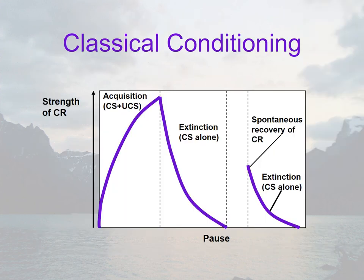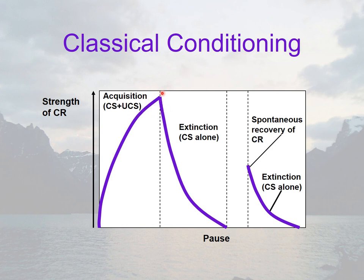Let's put all these terms together into one image. Here is the start of learning: sound the tone and you get no response at all, no salivation. Now you're pairing the neutral stimulus first — tone — with the unconditioned stimulus — food: tone, food, tone, food, tone, food — and then you see the height of the learning association. Sound that tone and get a ton of saliva. Now you remove the food: tone, tone, tone, no food. Eventually you'll get to the extinct phase, where now you're sounding the tone and getting no salivation.